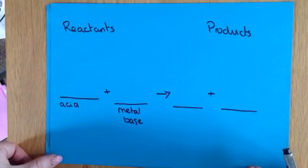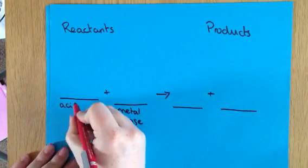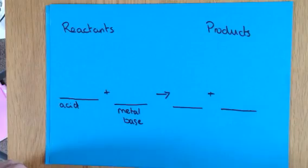You are going to need to know what the products are and be able to interpret your products when you have an acid reaction and it's reacting with a metal base.